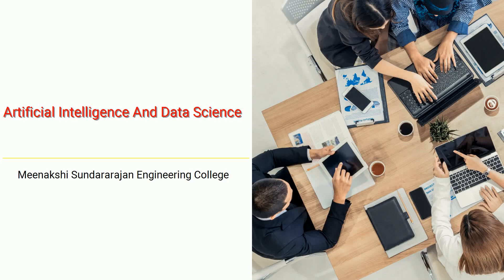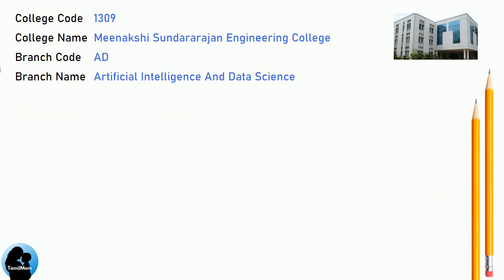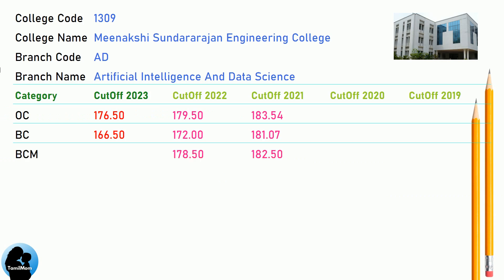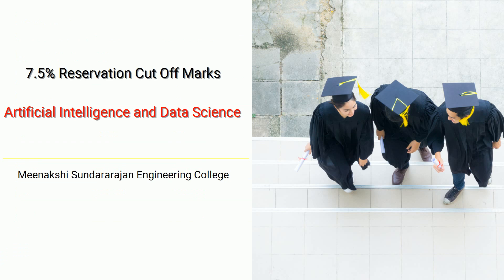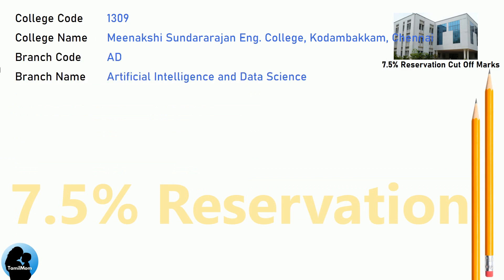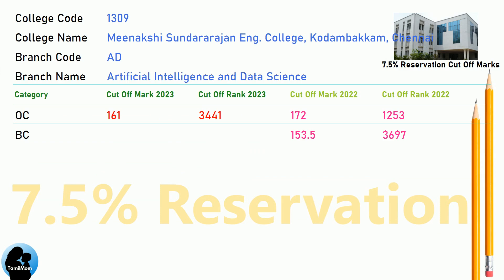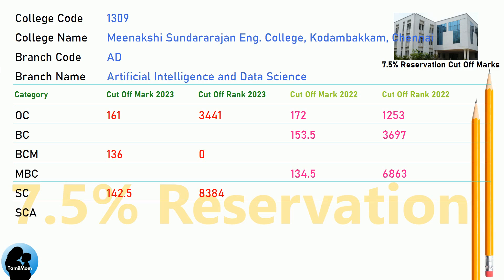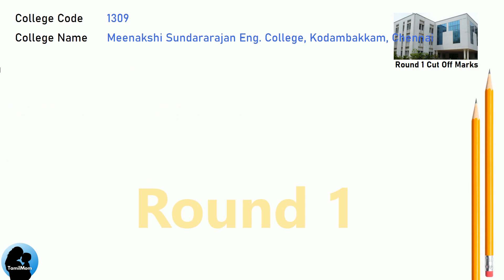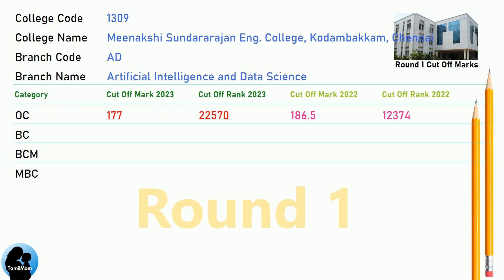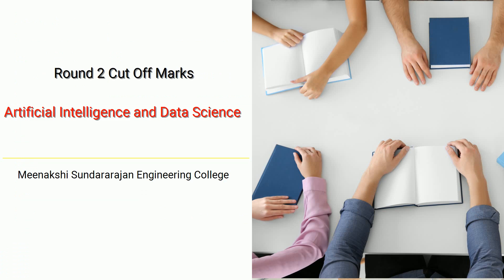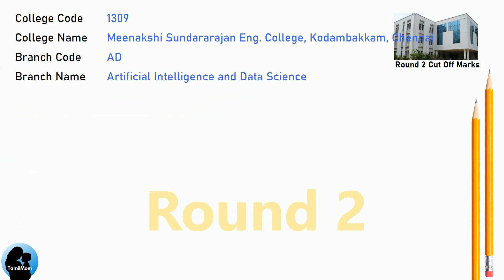DNA Cut-Off for Meenakshi Sundararajan Engineering College in Artificial Intelligence and Data Science. DNA 7.5 Reservation Cut-Off for Meenakshi Sundararajan Engineering College in Artificial Intelligence and Data Science. DNA Round 1 Cut-Off for Meenakshi Sundararajan Engineering College in Artificial Intelligence and Data Science. DNA Round 2 Cut-Off for Meenakshi Sundararajan Engineering College in Artificial Intelligence and Data Science.